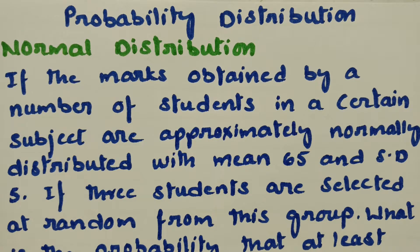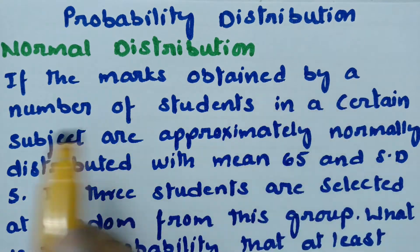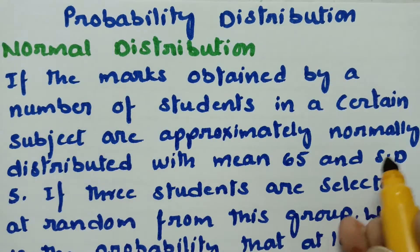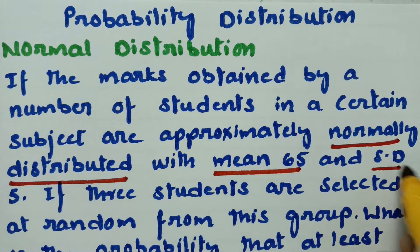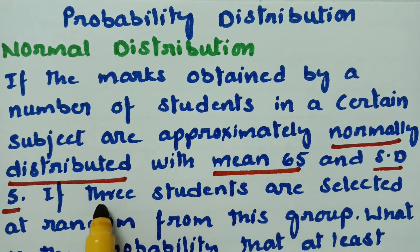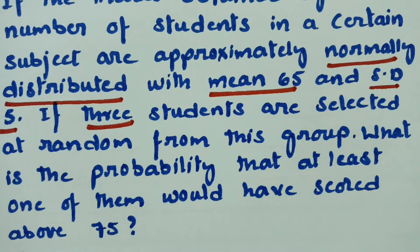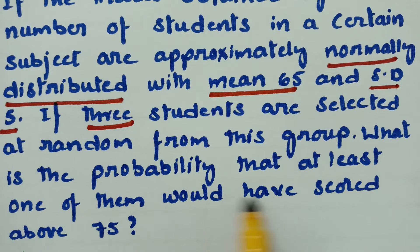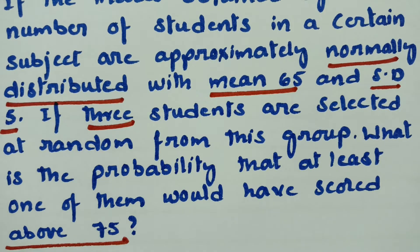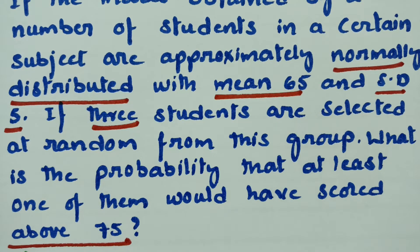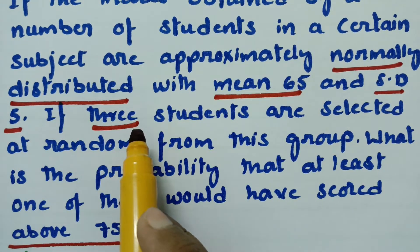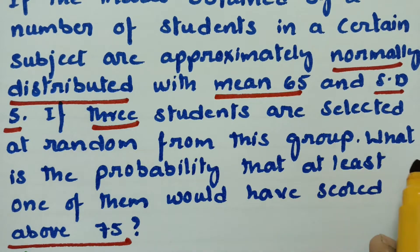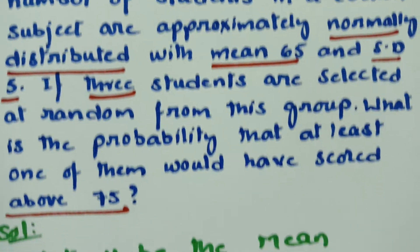This video is on normal distribution. Here is the problem: if the marks obtained by a number of students in a certain subject are approximately normally distributed, with mean 65 and standard deviation 5, and three students are selected at random from this group, what is the probability that at least one of them would have scored above 75?